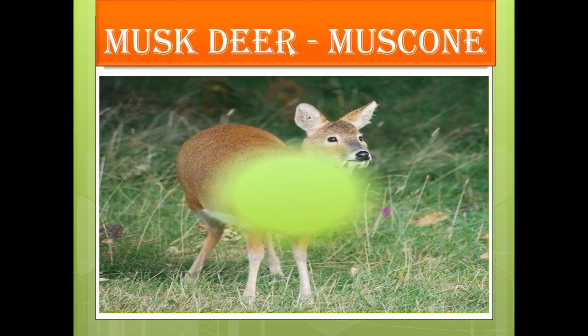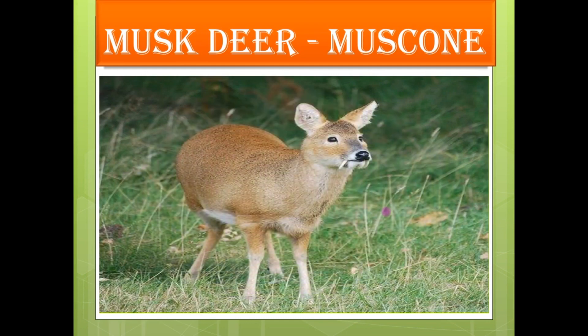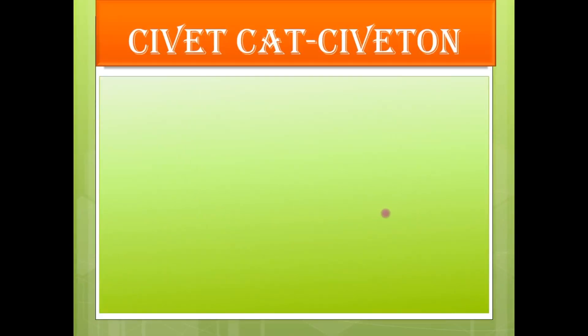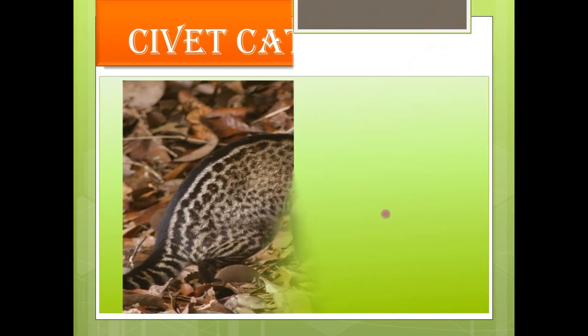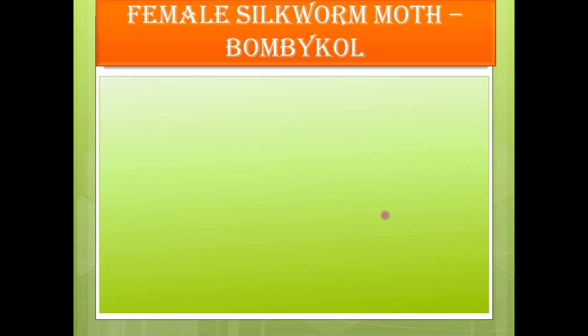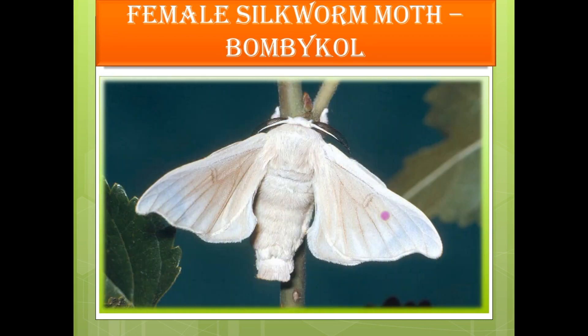Let's see some examples from higher organisms. Musk deer produce a pheromone called muscone. Civet cats produce civetone. And the female silkworm moth produces bombykol in order to attract its male.